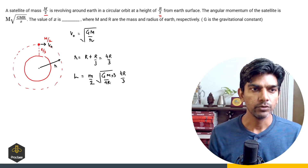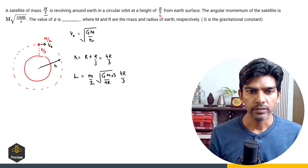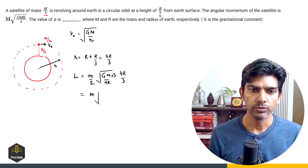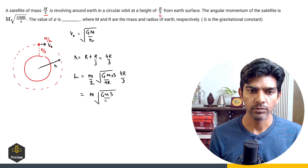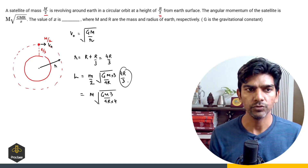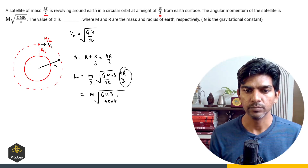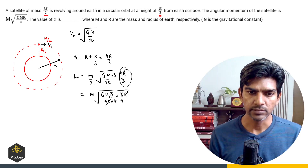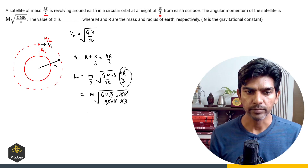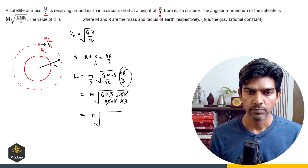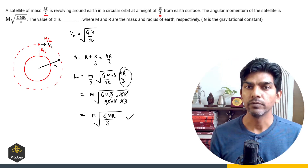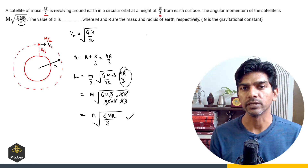Simplifying: taking terms inside, it becomes M times root of GM times 3 divided by 4R, then multiplying by 4R/3 gives 16/9 R squared inside. One R cancels out, giving M times root of GMR divided by 3. Comparing with the given expression M times root of GMR divided by X, we find X equals 3. So three is the answer.